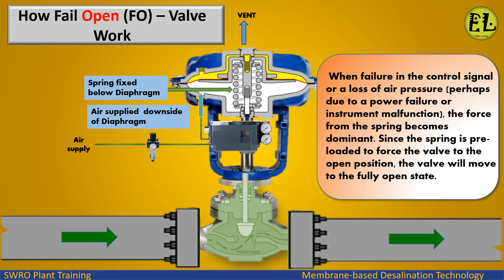How does a fail open valve work? When there is a failure in the control signal or a loss of air pressure, perhaps due to a power failure or instrument malfunction, the force from the spring becomes dominant. Since the spring is preloaded to force the valve to the open position, the valve will move to the fully open state.